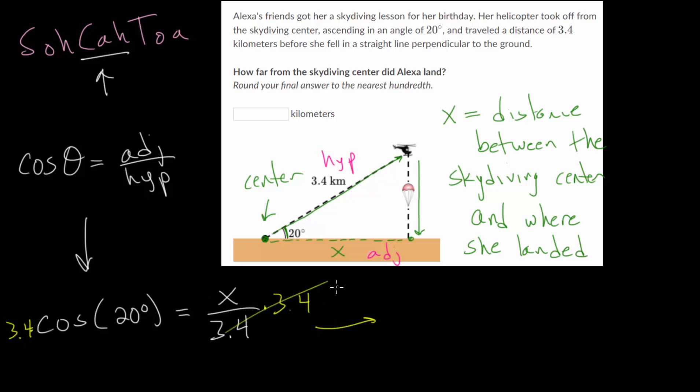And these will now cancel each other out, since that's just 1. Something divided by itself is always 1. So that 3.4 times by the cosine of 20 degrees is equal to that missing distance that we're trying to find.